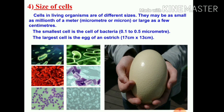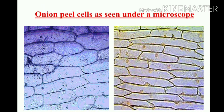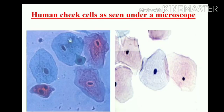Now let's look at the size of cells. Cells in living organisms are small and of different sizes — maybe as small as a millionth of a meter or as large as a few centimeters. The smallest cell is the bacterial cell, with a diameter of 0.1 to 0.5 micrometers. The largest cell is the egg of an ostrich. You can see different cells with different sizes, and now let's observe the onion peel.